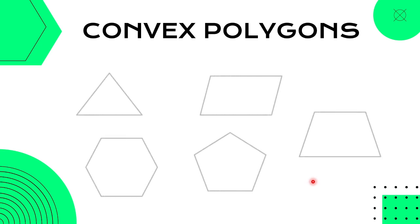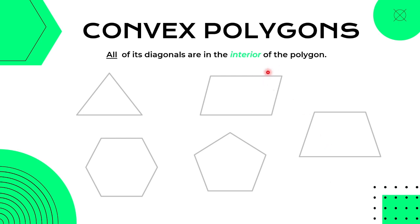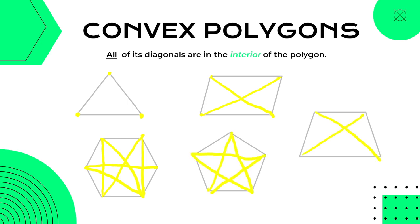Here are some examples of convex polygon figures. All of its diagonals must be in the interior of the polygon. Recall that in a triangle, walang diagonal ang madudrawing dyan dahil ang mga vertices ay automatically consecutive. While sa mga sumusunod naman, all of the diagonals that we can draw when we combine the non-consecutive vertices will be inside the polygon.